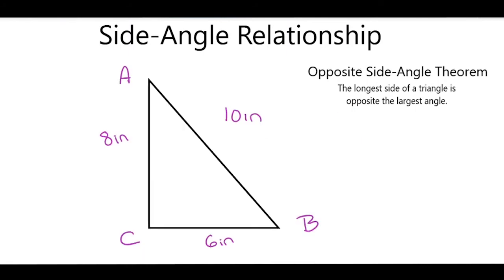You can also use the opposite side angle theorem to find the largest angle when you know the measures of all the sides. So, here I see that my longest side is side AB, and the length is 10 inches, and the angle that is opposite to this side would be angle C. So, angle C is our largest angle.